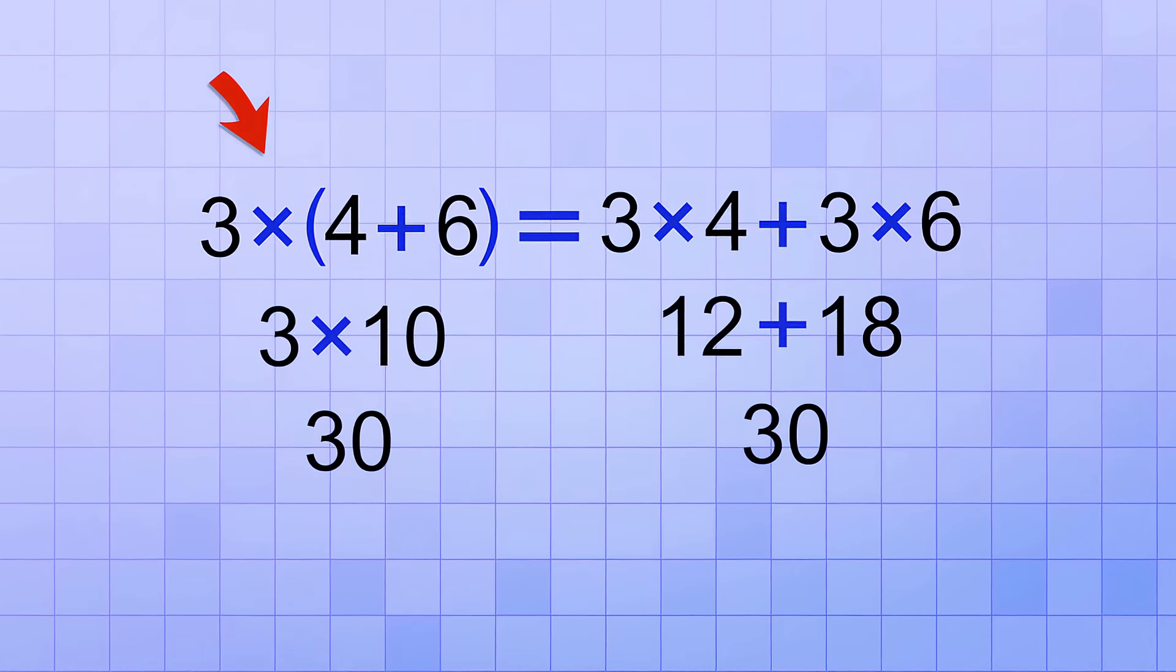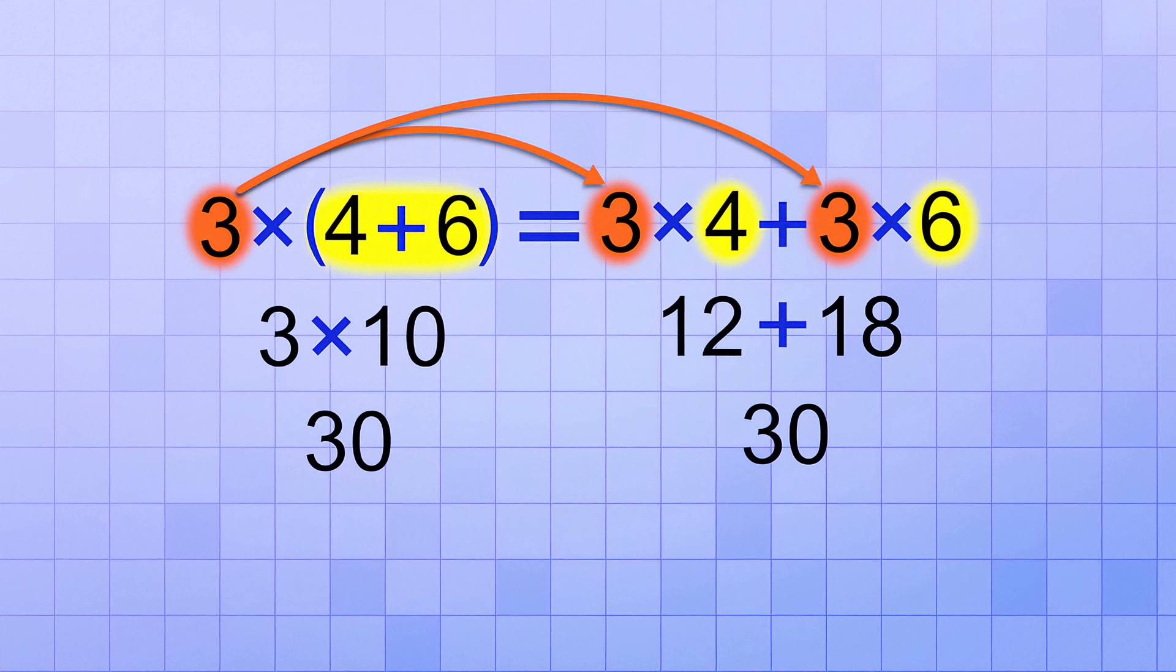In the first form, the factor 3 is being multiplied by the entire group all at once. So we needed to do the addition inside that group first. But in the second form, we used the Distributive Property to rearrange the expression so that the factor of 3 is multiplied by each member of the group individually, instead of the whole group all at once. Distributing that factor made the group go away, so we didn't have to do the addition inside that group first.